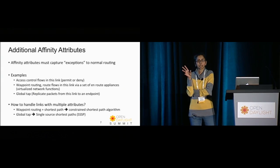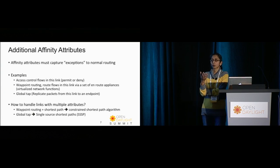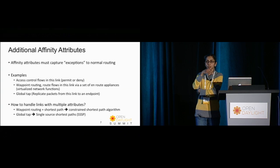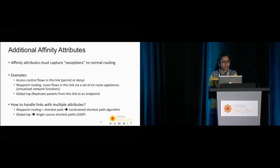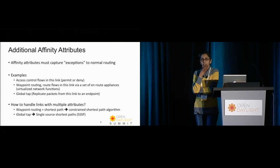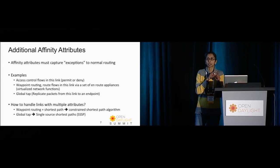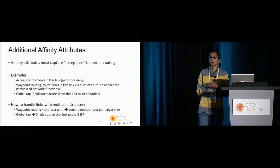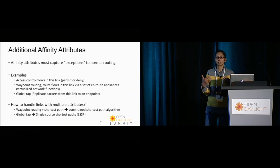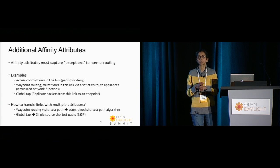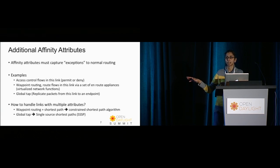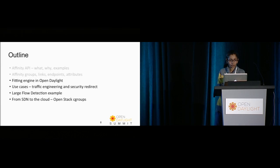Multiple attributes introduce complexity in the routing service. Any network forwarding service must take these into account. If you have waypoint routes as a constraint on default forwarding, the routes returned must include those on-route destinations. Global tap is special because traffic from a certain source must go not just to its destination but also to an additional endpoint, requiring the routing engine to compute a loop-free set of paths — calling for additional intelligence not available in the standard OpenDaylight routing implementation.